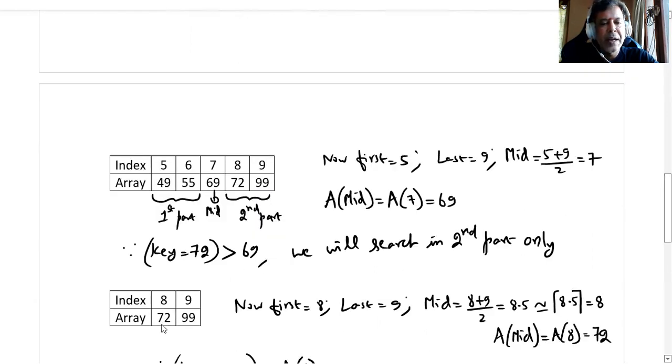Again, the second part is written separately. Now first index is 8, last index is 9. That means the mid value will come at position 8.5. 8.5 is truncated, meaning we consider the floor value of 8.5, which is 8. That means A(mid) is A(8), which is 72.